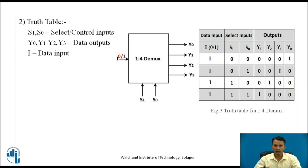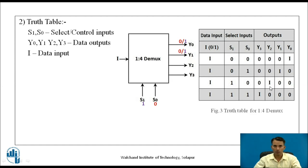When S1 and S0 are both 0, Y0 is selected and the input is connected to Y0. When S1 is 0 and S0 is 1, Y1 is selected so the input is connected to Y1. When S1 is 1 and S0 is 0, Y2 is selected and input 0 or 1 is connected to Y2. When S1 and S0 are both 1, the input i is connected to Y3.